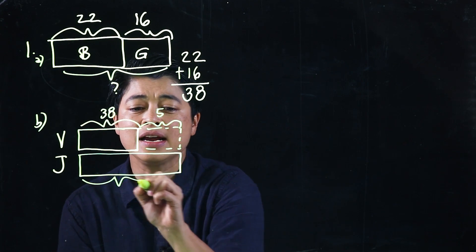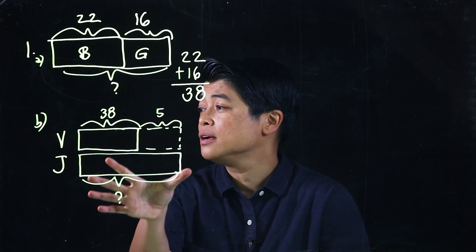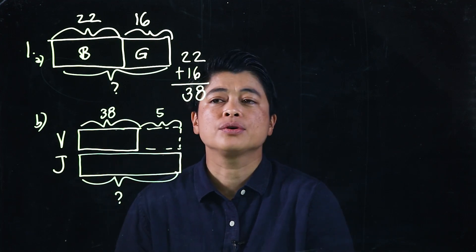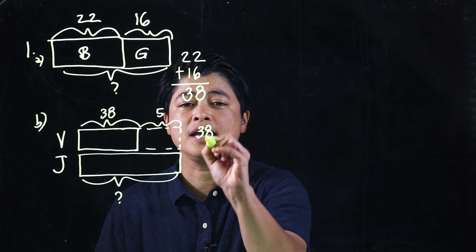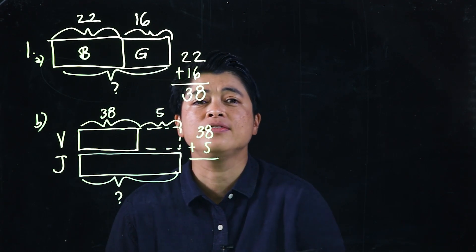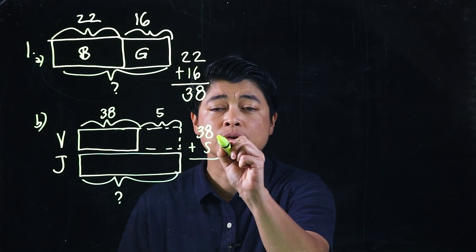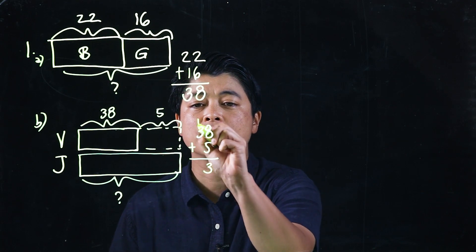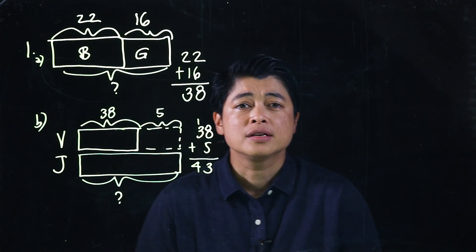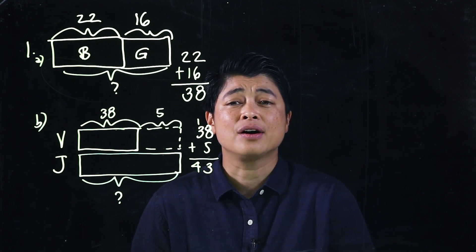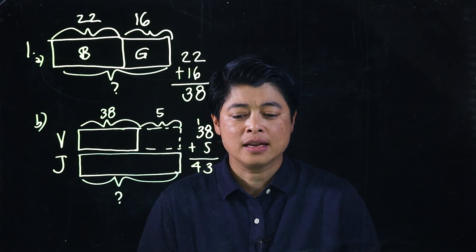So clearly the question is the total because Joshua's is missing. So therefore, this will be an addition problem: 38 plus 5. For consistency, we start with 8, we need 2, therefore we'll have 3 extra, that will be 13, which means this will be 4. So in Joshua's class, there are 43 kids.